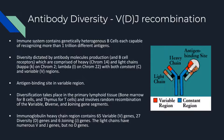The immunoglobulin heavy chain region contains 65 variable, or V-genes, 27 diversity, or D-genes, and 6 joining, or J-genes. The light chains have numerous V and J-genes, but no D-genes. A huge number of VDJ recombinations are possible, resulting in many different antibodies being generated, each with different variable regions. Since the antigen binding site is a variable region, it differs between antibodies, and this results in uniqueness, with each antibody having a different antigen specificity. It should be noted that once a B cell produces an antibody gene during VDJ recombination, it cannot express any other variable region. Thus, each individual B cell can produce one type of antibody, and that's how genetically heterogeneous B cells can recognize over a trillion antigens through different antibody production, made possible with VDJ recombination.